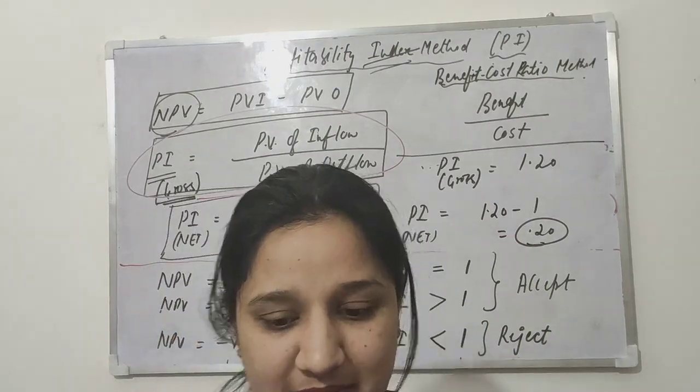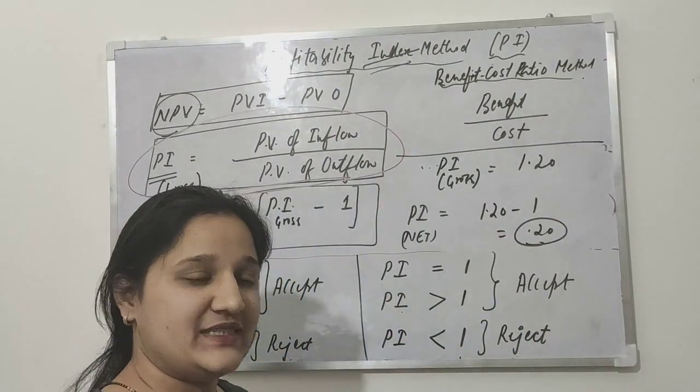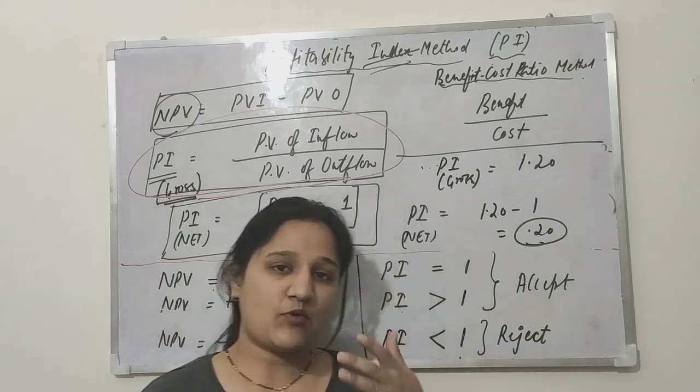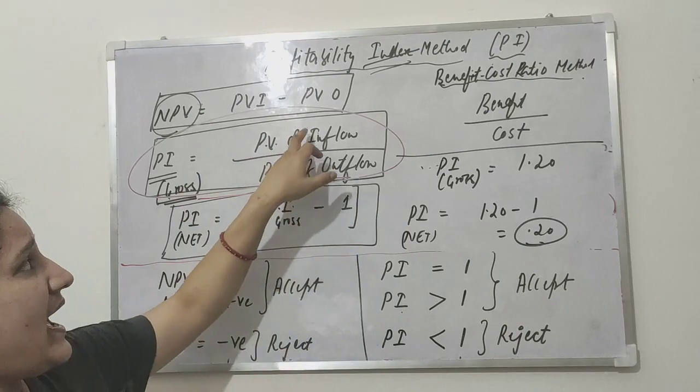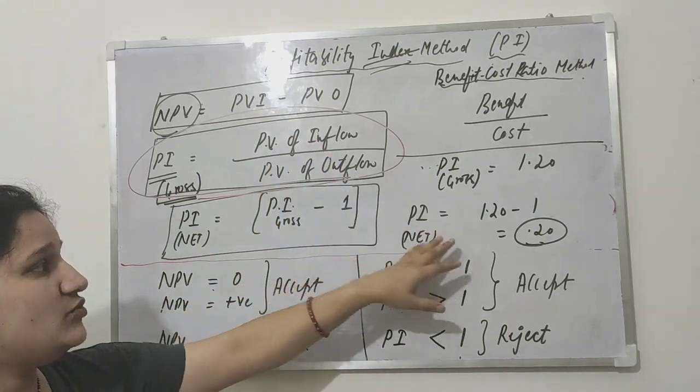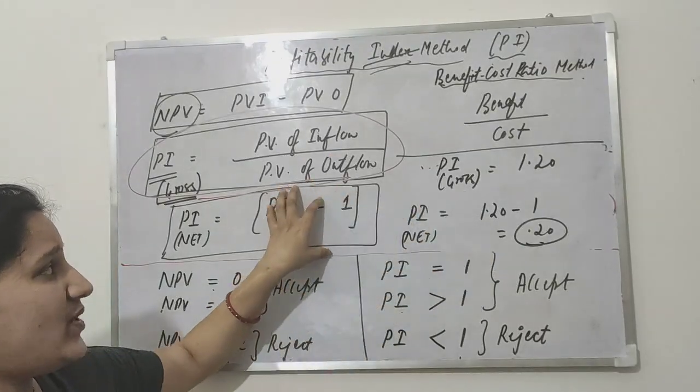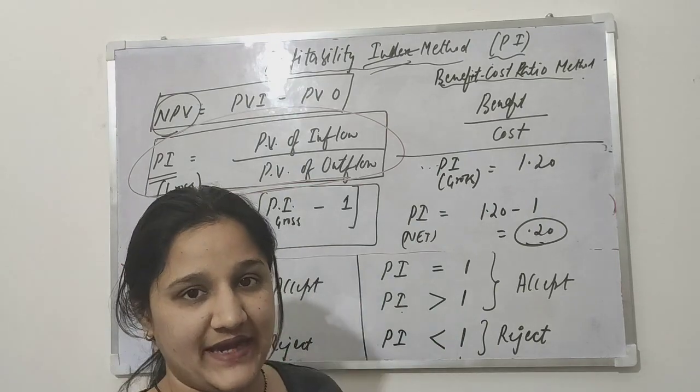Very simple method, you can calculate this method very easily. You just need to know how these two values are calculated, which we learned in NPV and IRR. You can just divide these and you will get gross. And whatever value comes, if you minus 1 from it, you will get the net answer.